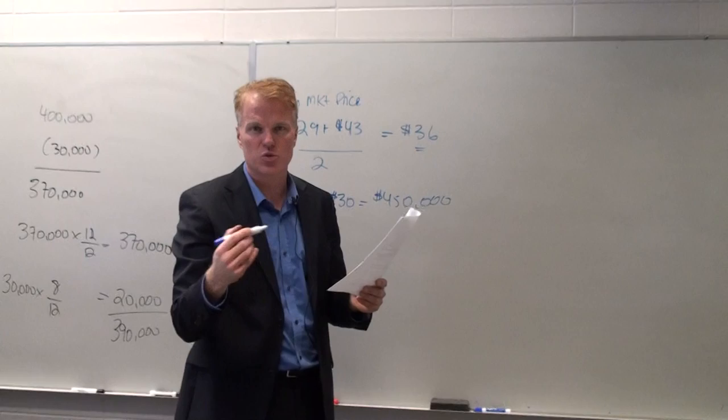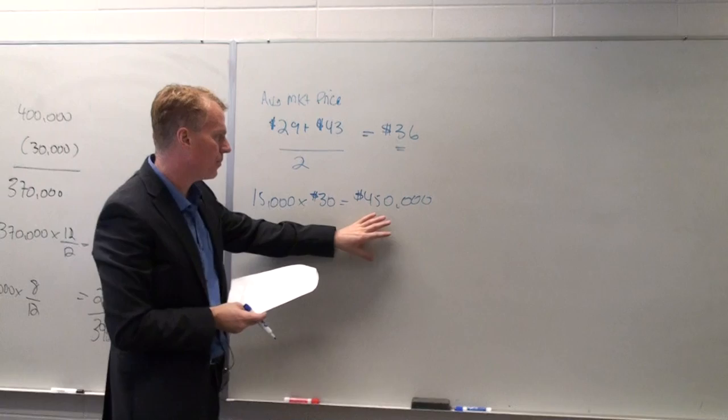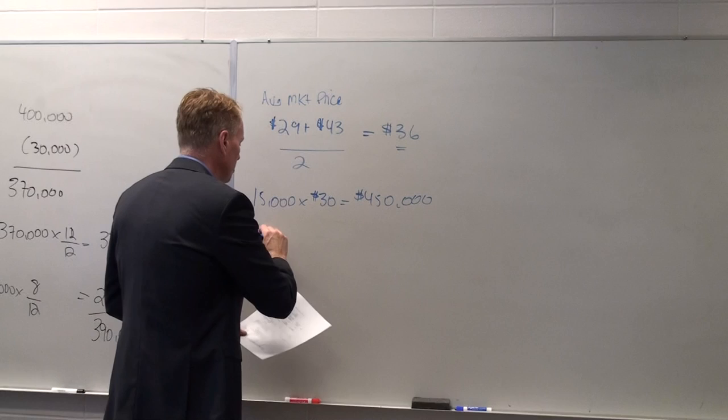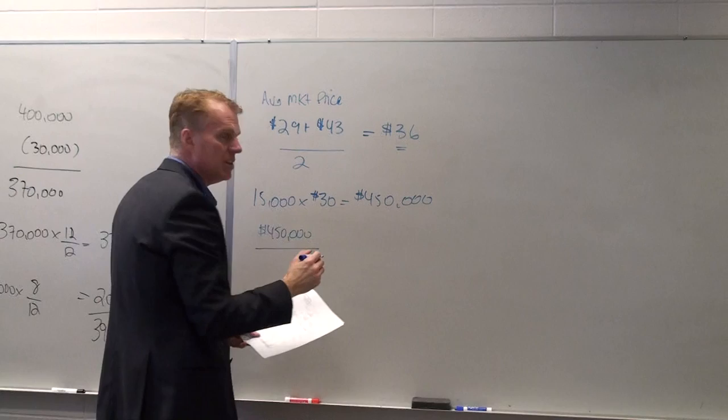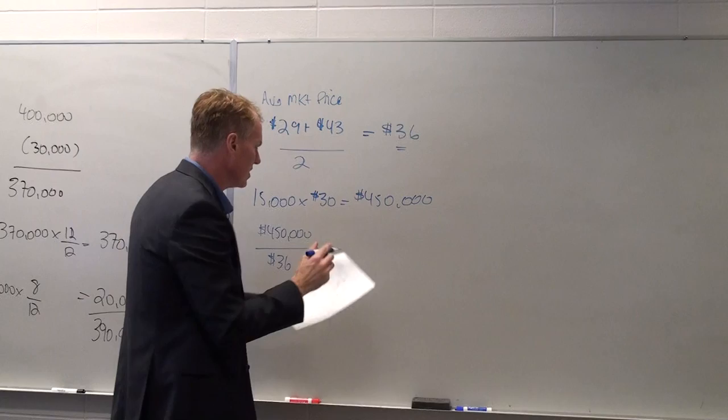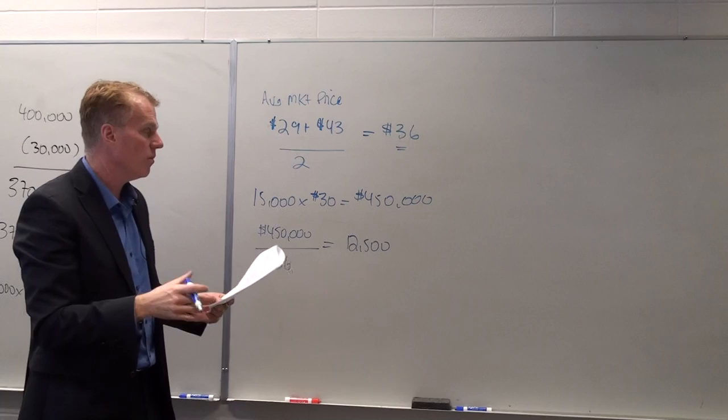This is called the treasury stock method. If we had $450,000, how many shares could we buy in the open market with that money? So $450,000 divided by the average price of $36 tells us that we could buy 12,500 shares.